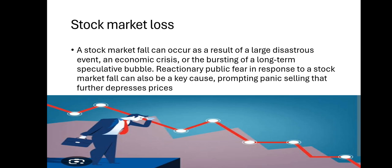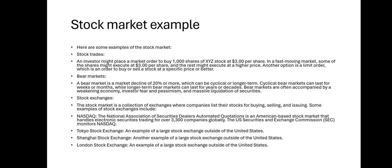Stock market examples: one, stock trade — an investor might place a market order to buy 1,000 shares of XYZ stock at $3 per share. In a fast-moving market, some of these shares might execute at $3 per share and the rest might execute at a higher price. Another option is a limit order, which is an order to buy or sell a stock at a specific price or better.